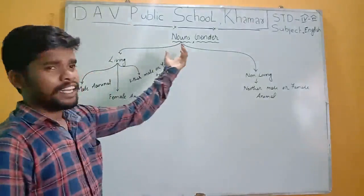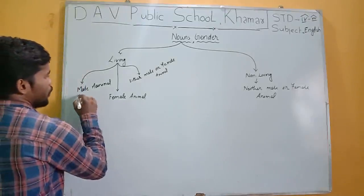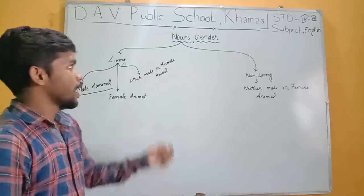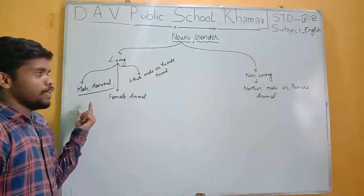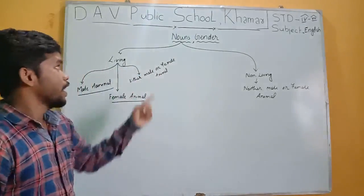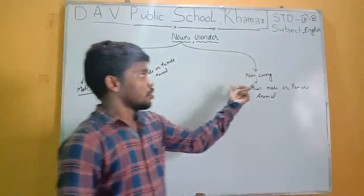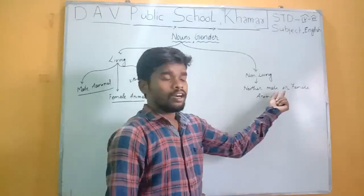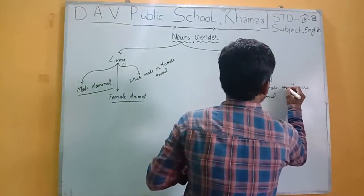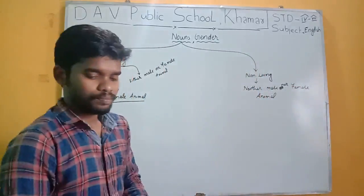If any noun is living, then that living noun may be a male animal, or it may be a female animal, or it may be either male or female. A non-living noun is neither male nor female.